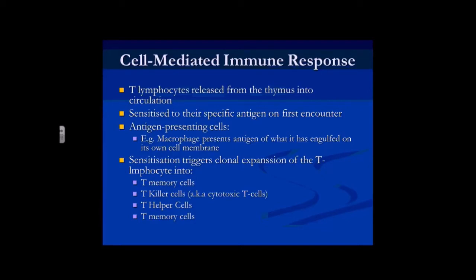On first meeting of an antigen, T lymphocytes are sensitised and then go through a process called clonal expansion — where the generic T lymphocyte splits into one of four categories. The T lymphocyte can then become a memory cell, a killer cell, a helper cell, or a suppressor cell. We've talked previously about what those different cells do, so I'm not going to dwell on that at this moment in time.